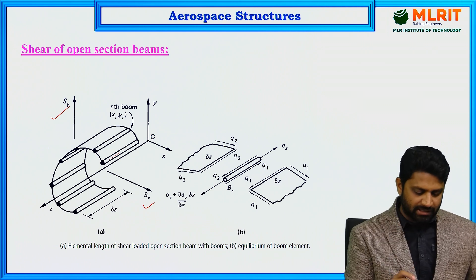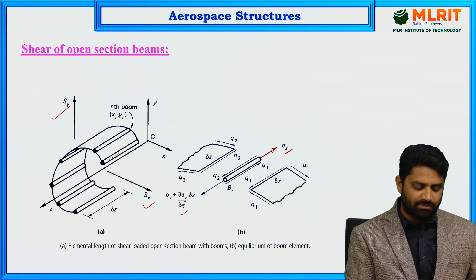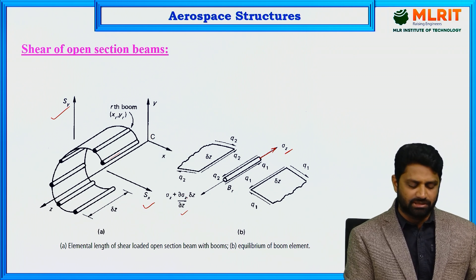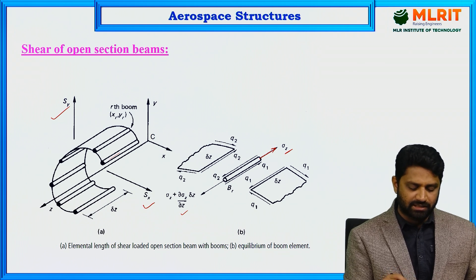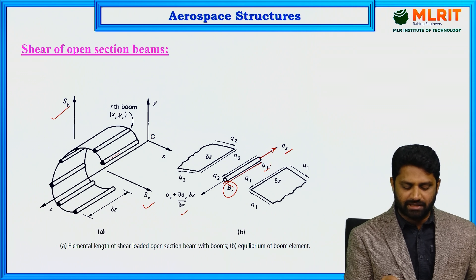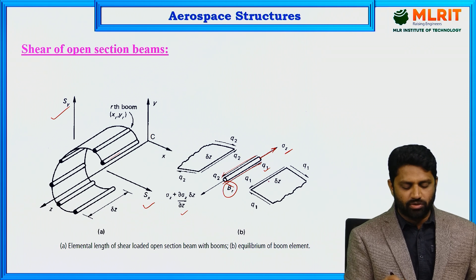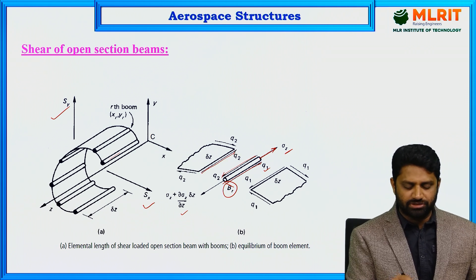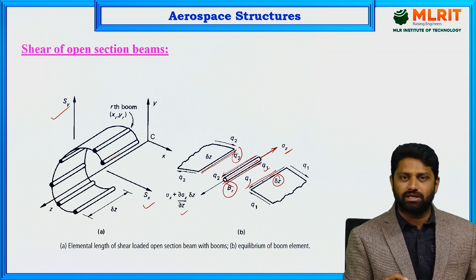The stress on this boom is sigma_z in one direction, and on the opposite direction the stress is sigma_z plus (∂sigma_z/∂z)·delta_z, which is the incremental stress. The boom area is B_r. The shear flow q1 acts on one side and q2 on the other side. In the adjacent panel there are equal and opposite shear flows q2 and q1, and the length of the boom is delta_z.